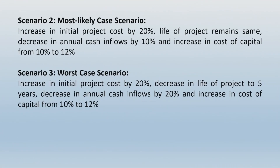Scenario 2 is the most likely case scenario. It involves: increase in initial project cost by 20%, life of project remains the same, decrease in annual cash inflows by 10%, and increase in cost of capital from 10% to 12%. All these changes are to be incorporated together under scenario 2.